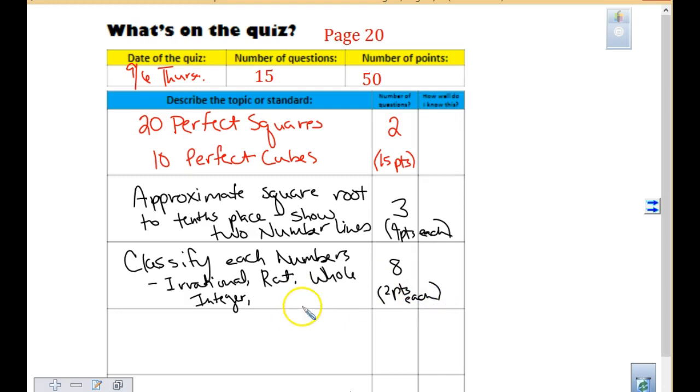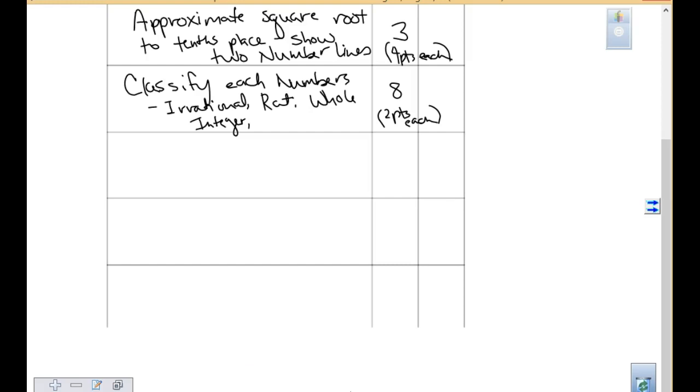When you classify those, you might have to tell me why. It's a repeating decimal, it's rational. It was a terminating decimal, it's rational, right? So giving those. Then I'm going to ask you to explain the difference. Explain the difference between rational and irrational.